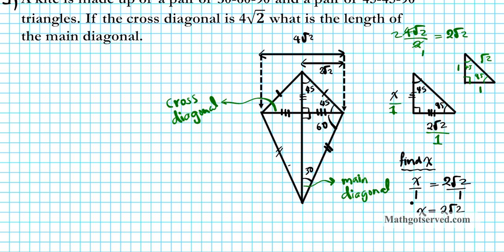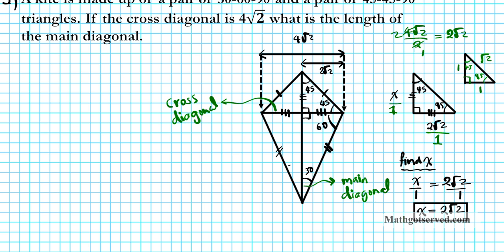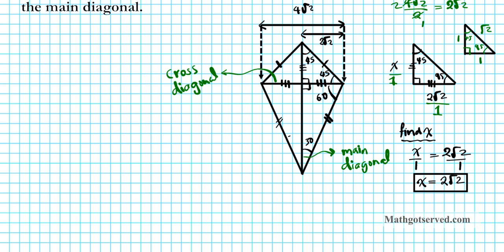We have just found the first portion — the upper portion of our main diagonal, the part above the cross diagonal — and it equals 2 root 2. Now we need to find the other portion on the 30-60-90 triangle side. We need to find this missing length.